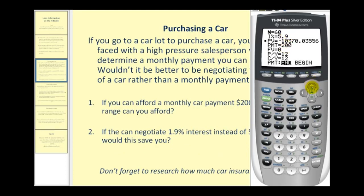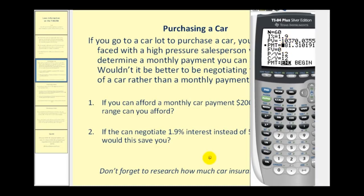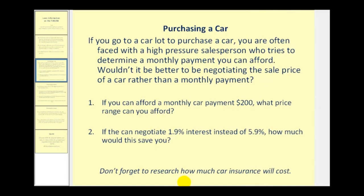What we can do here is go back and change the interest rate to 1.9, and then see how this would affect our monthly payment. We go down to monthly payment, clear this, and press alpha enter — it will calculate what our monthly payment would be. Notice it dropped from $200 a month to just over $181 per month. So we can change any of these values and then solve for one of the unknowns. When you go to purchase a car, don't forget to also research how much car insurance will be.